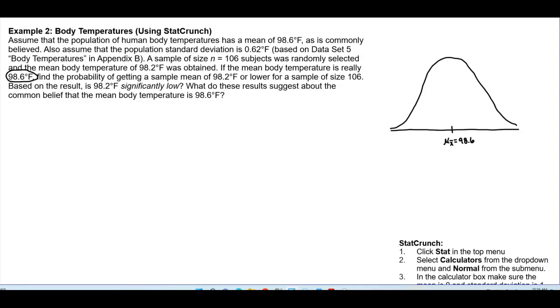And what we're looking for is find the probability of getting a sample mean of 98.2 degrees Fahrenheit or lower. So that's to the left of the mean, and we're looking at 98.2. And so what we're looking for is the area. So we're going to shade everything to the left here.